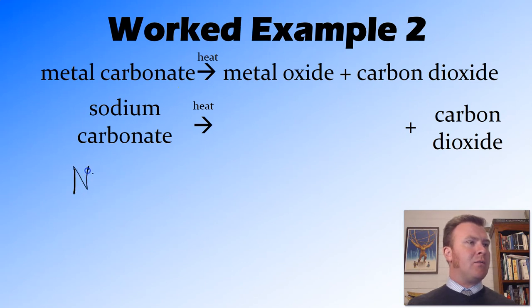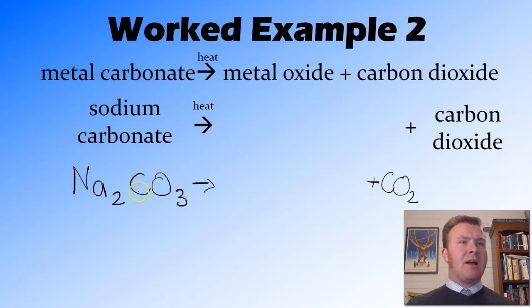So sodium carbonate. So I'll put this into a formula. Now, sodium is a 1+, carbonate's a 2-, so we're going to need 2 sodium for this one. Now, it's going to produce carbon dioxide. And so we've got the carbon and two of the oxygens going to form that carbon dioxide. We're going to be left with the sodium and one of those oxygens, which will be our sodium oxide.